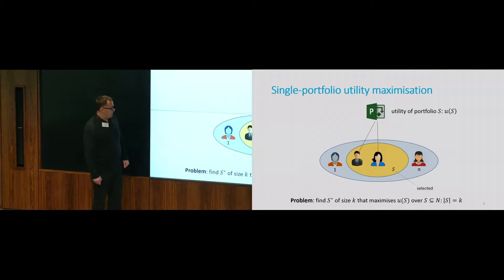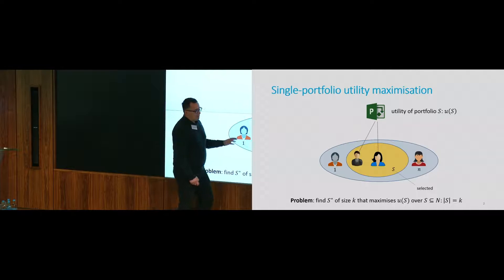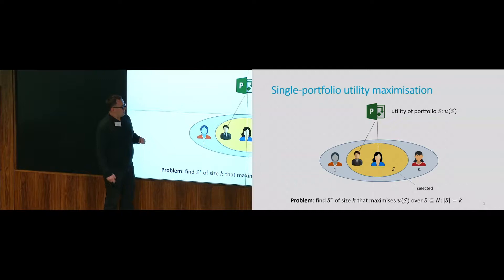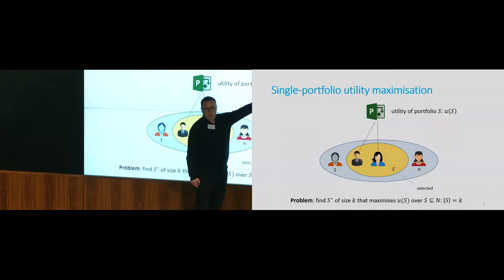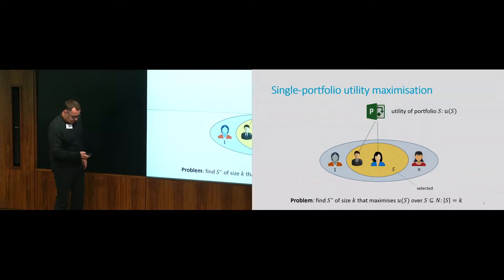The goal is to maximize the utility function subject to a cardinality constraint. We are going to be in a discrete setting — it's not a convex optimization problem. It's about maximizing a set-valued function: for each given subset of elements there is a value, and you need to find the one which maximizes that value.